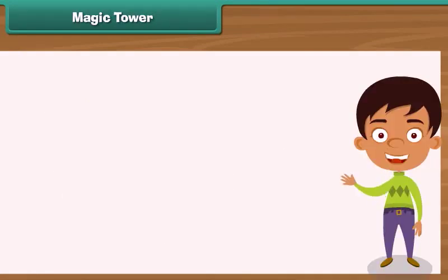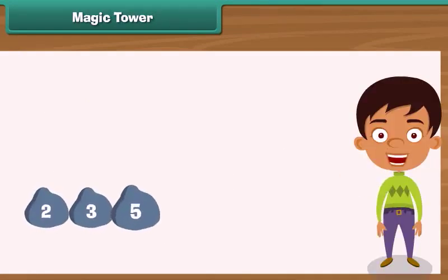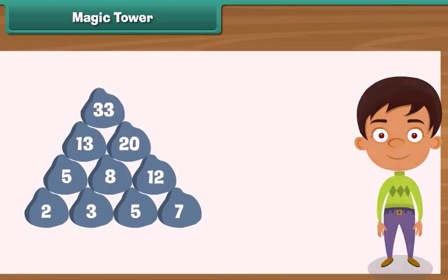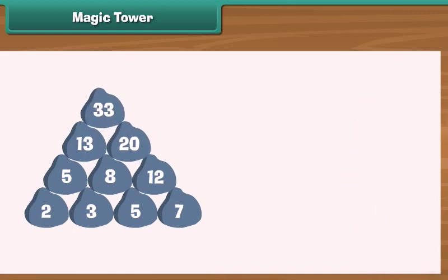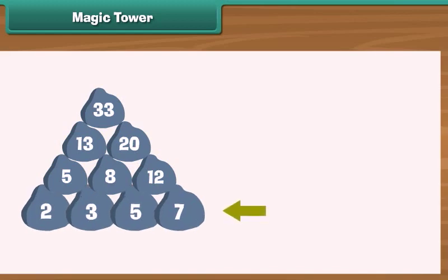Magic tower. Look at these number stones arranged as a tower. There is a pattern in them. Let us decipher it. Let us take the stones in the bottom most row. 2 plus 3 is equal to 5.